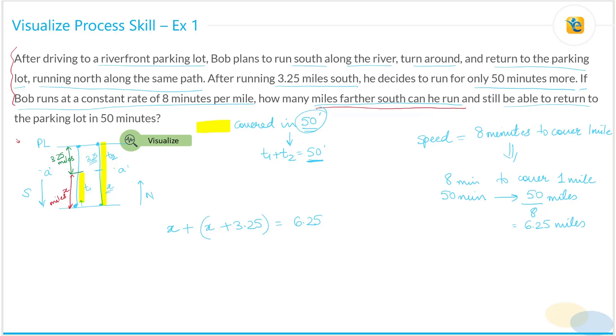So again, we are visualizing this part once again. We are utilizing our visualized information and we are utilizing that to figure out what is this 6.25. And now we simply solve this: 2X plus 3.25 is equal to 6.25. And what you get is X is equal to 1.5 miles. And that is your answer. Your correct answer over here is choice A.